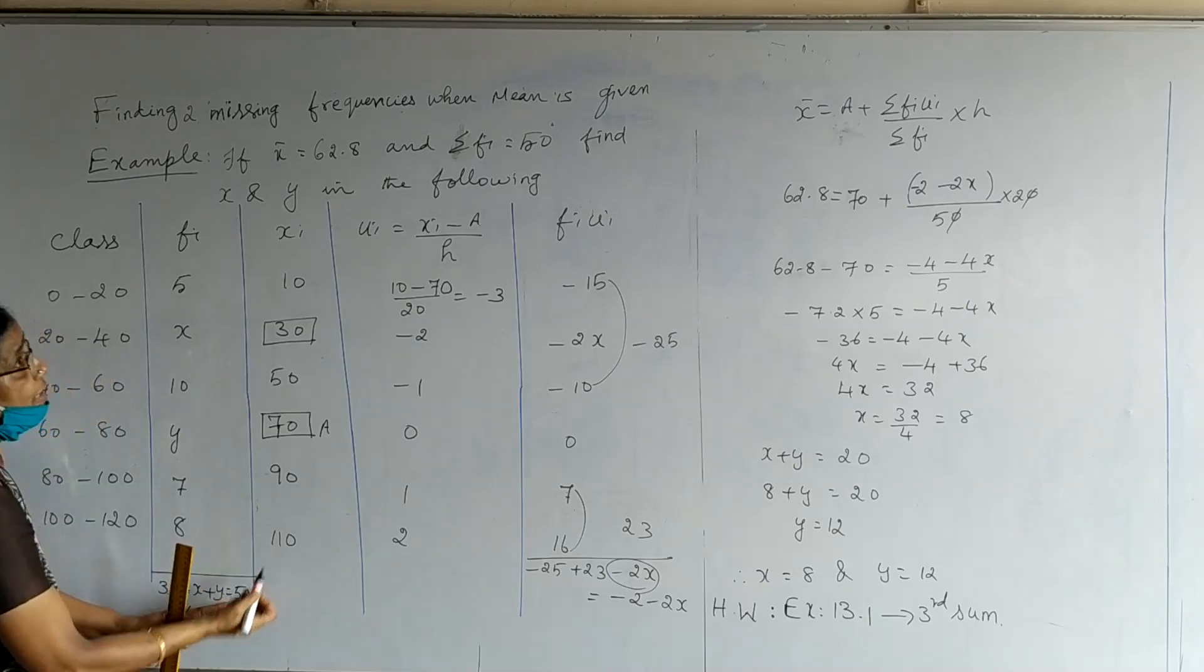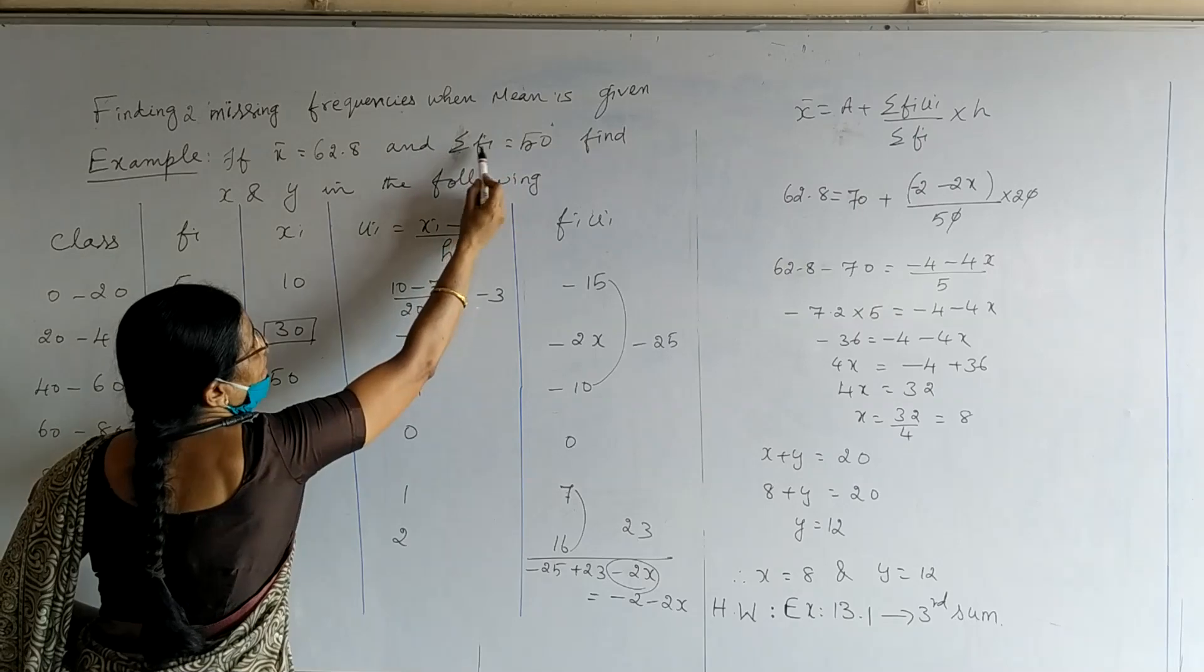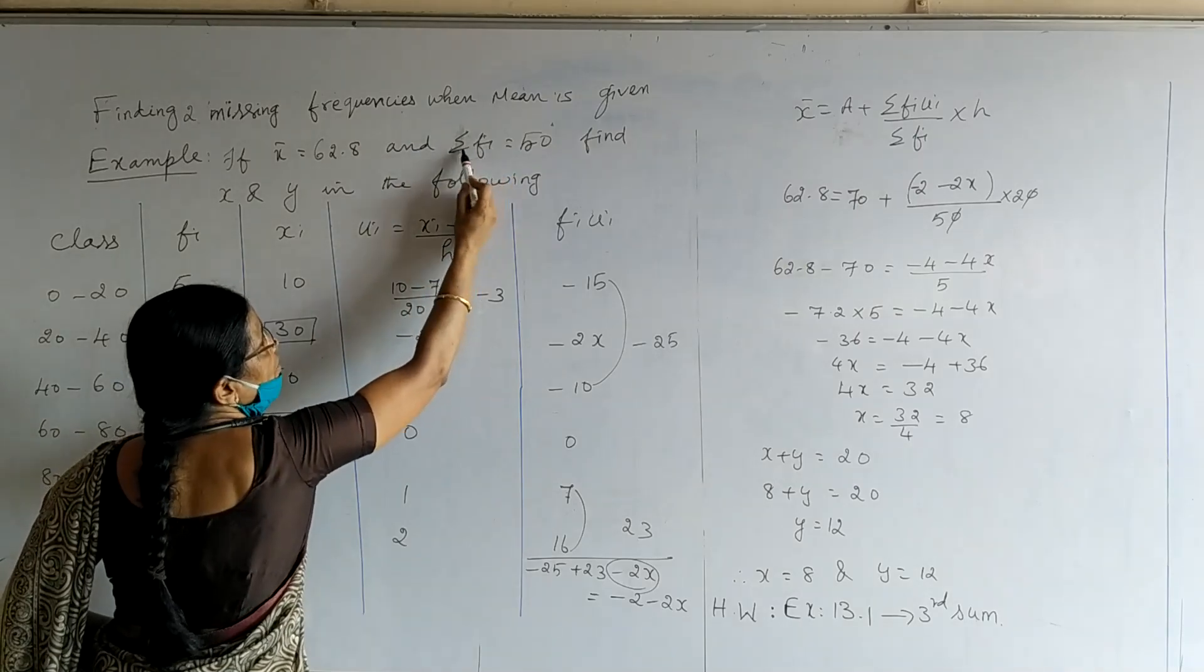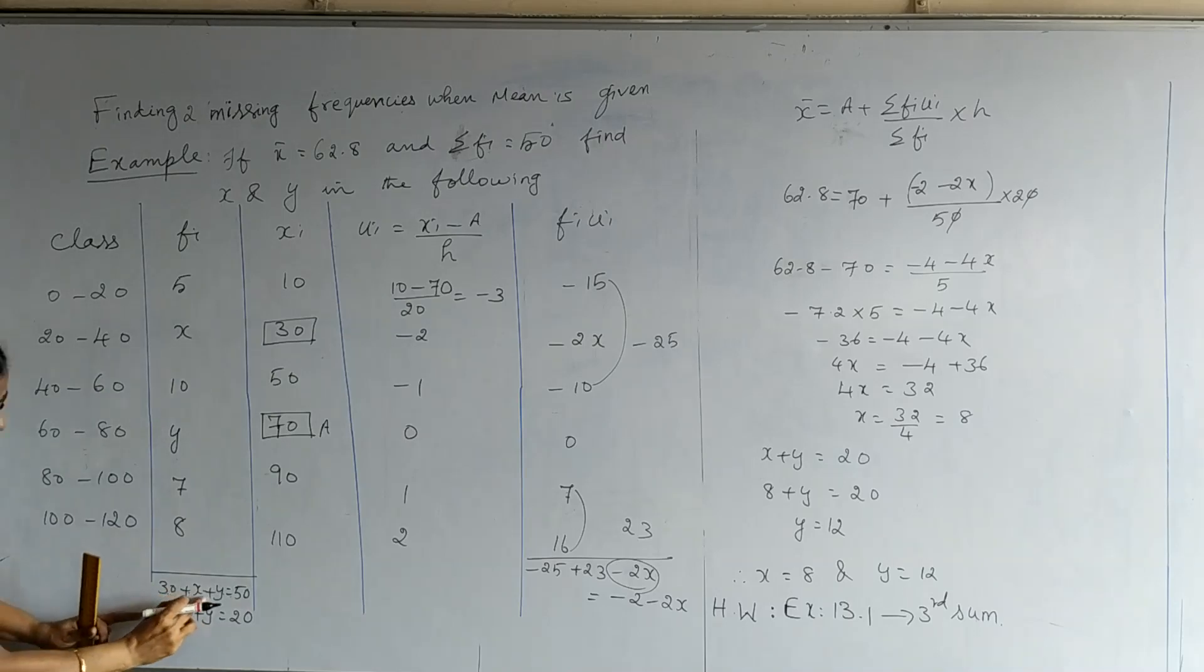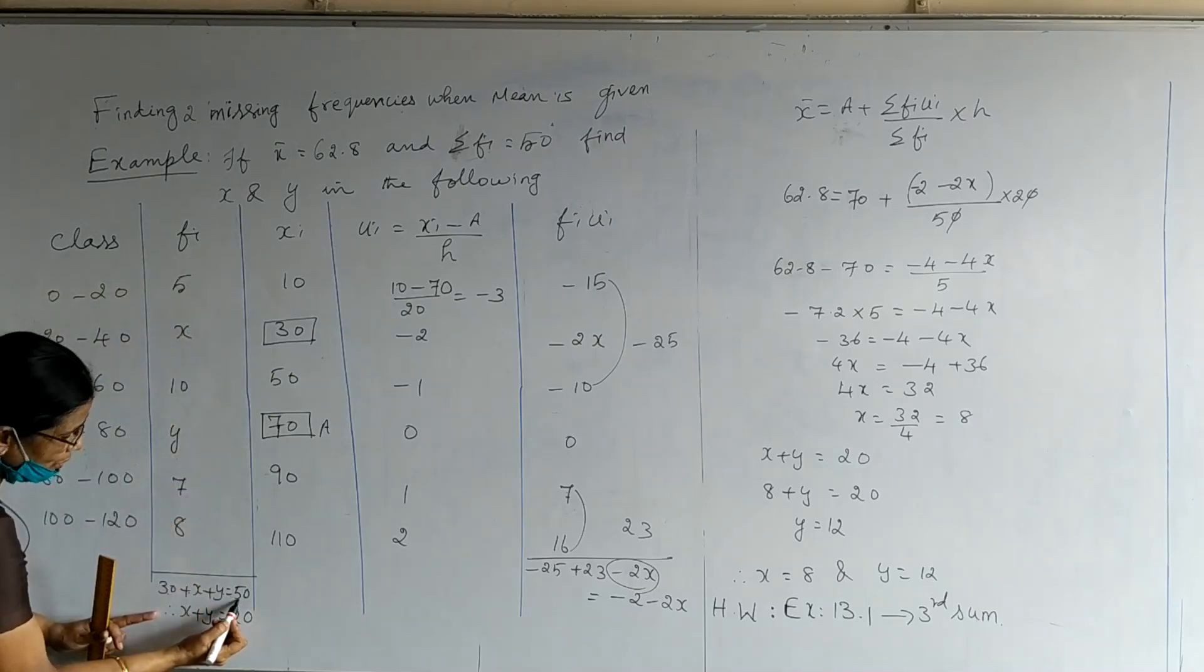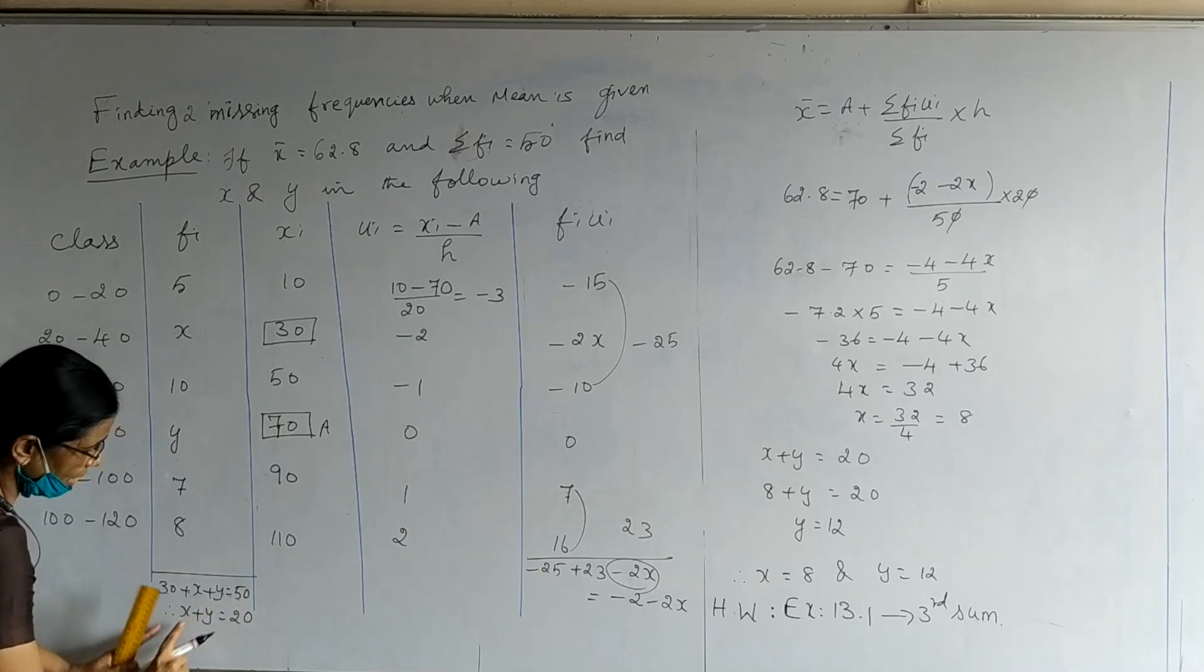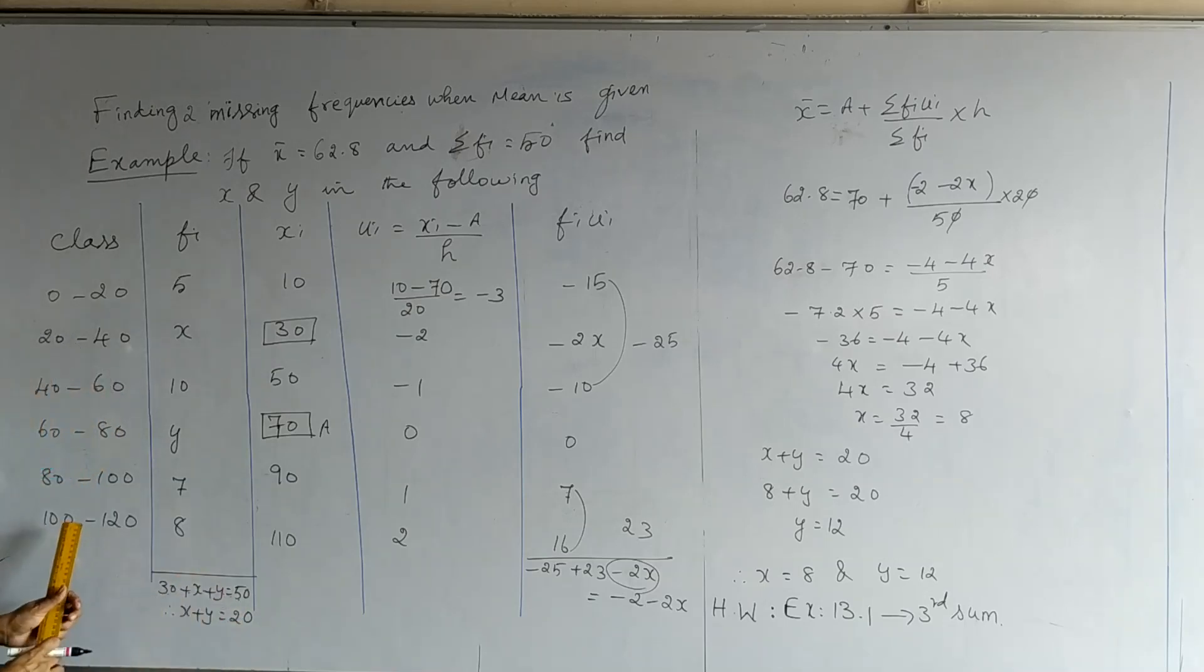I have written it is equal to 50. 50 is given in the question as sigma fi. We know sigma fi is total of frequency column. Therefore, one total is 30 plus x plus y from the column, and one is given in the question as 50. So, equating these two, we get x plus y is equal to 20.